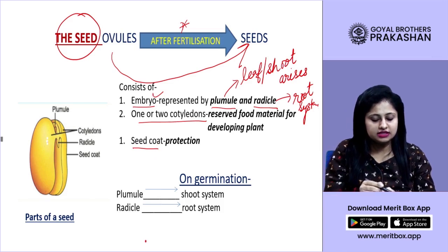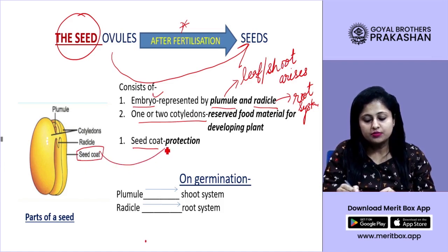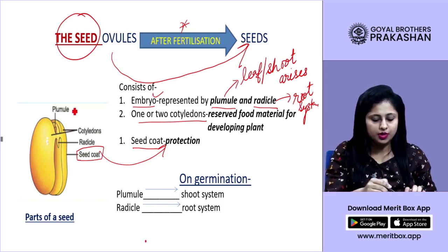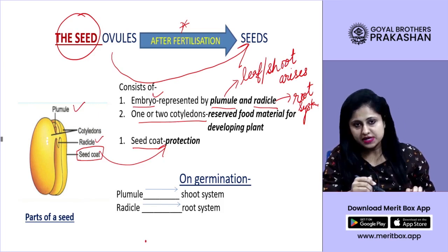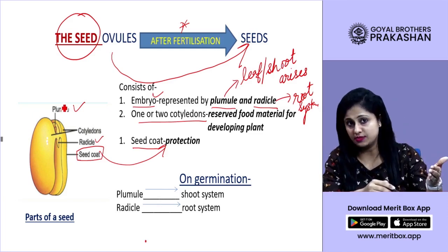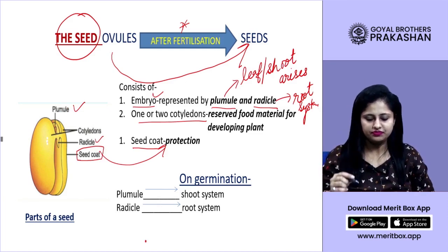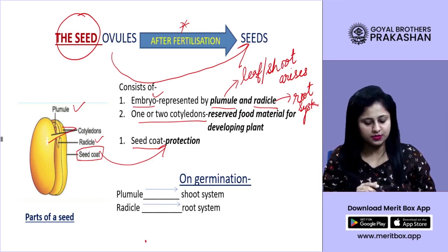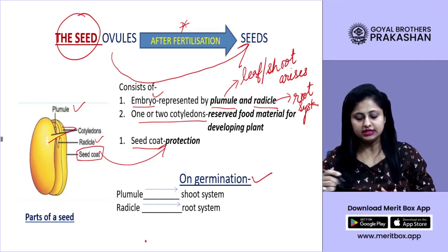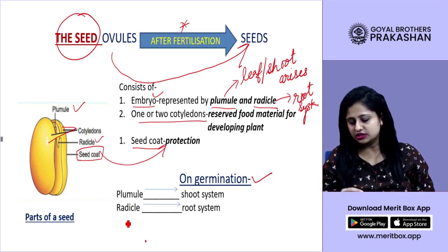The seed coat provides protection to the seed. Inside, the plumule and radicle are present. On germination, the plumule gets converted into the shoot system and the radicle gets converted into the root system.